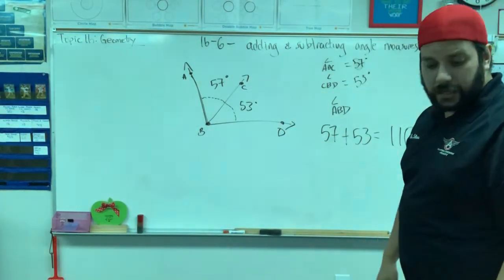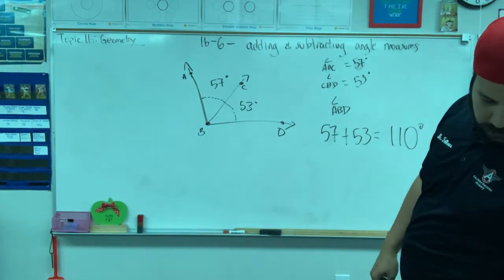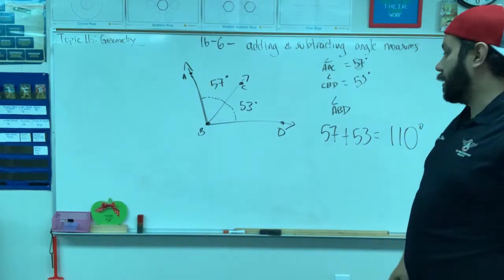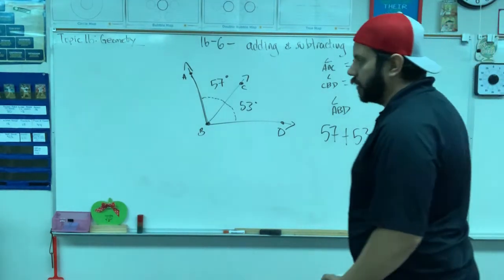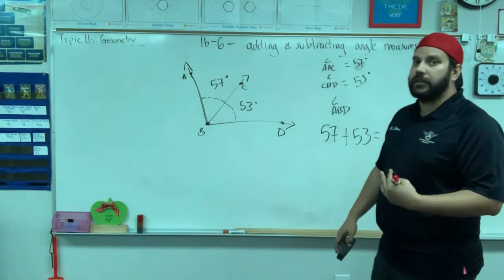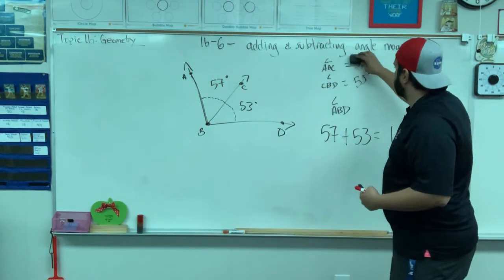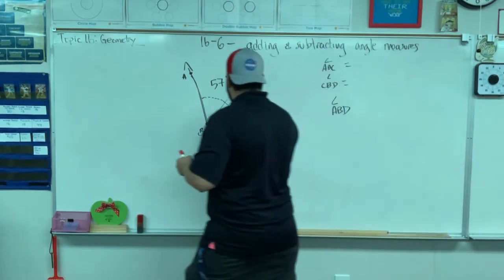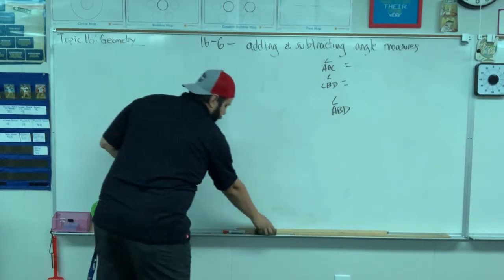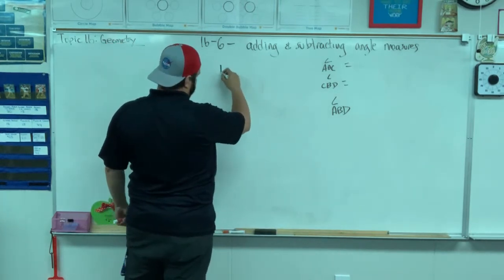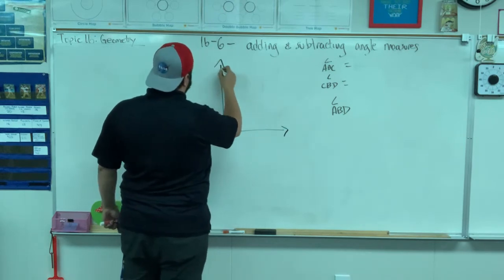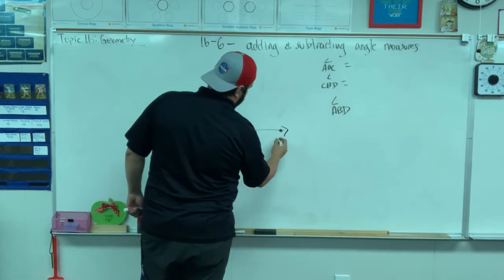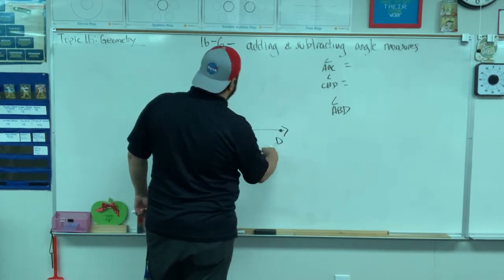Boom, goes the dynamite, there you go. I'm going to do one more and I'm going to give you a little bit less information. You're going to have to let your number sense tingle and tell me what's going on. So I'm going to keep the same names. Here's A, B, C, and D.